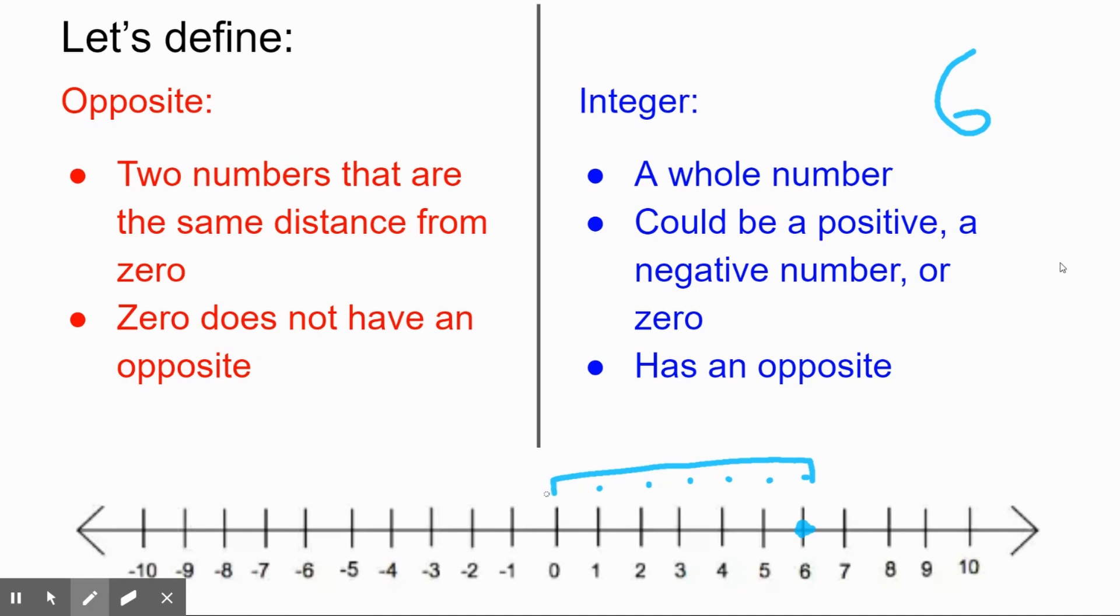To find its opposite, we need to start at zero and also go a distance of six, but in the other direction. So we go one, two, three, four, five, six. Where does that leave us? At negative six.